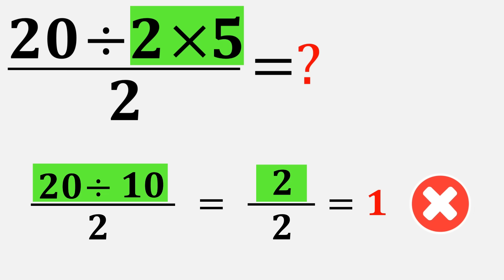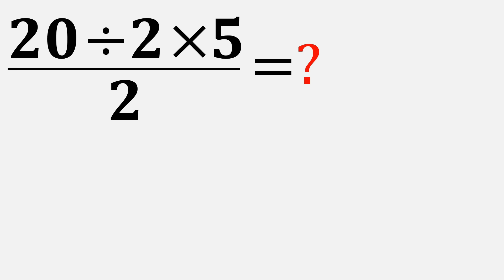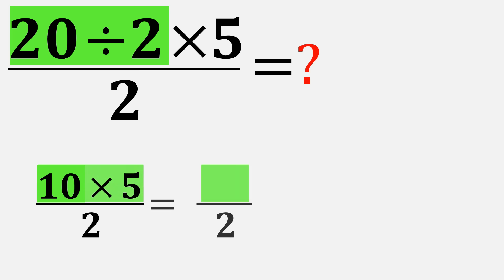Others might do it differently. They start with 20 divided by 2, which gives 10. Then they multiply 10 by 5 to get 50, and finally they divide 50 by 2 and get 25.